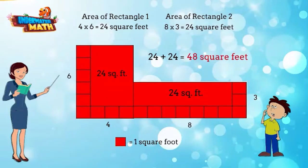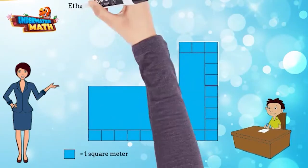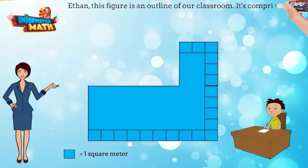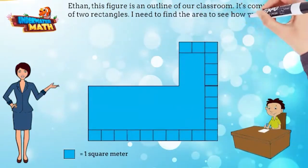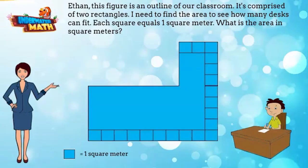Congratulations, you found the area of this figure. Now let's try a word problem. Ethan, this figure is an outline of our classroom. It's comprised of two rectangles. I need to find the area to see how many desks can fit. Each square equals one square meter. What is the area in square meters?